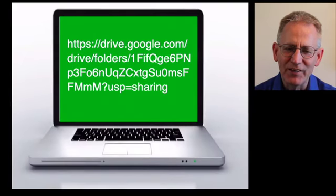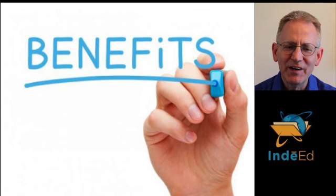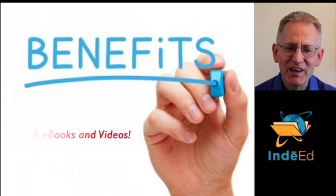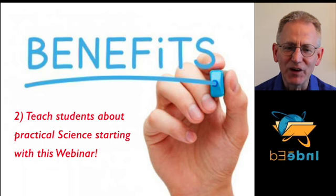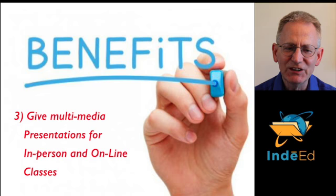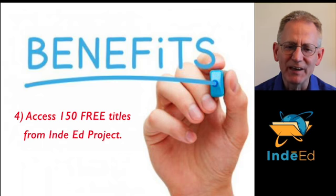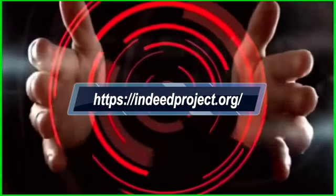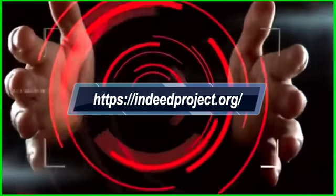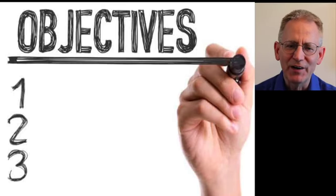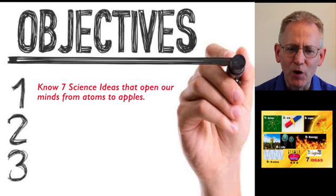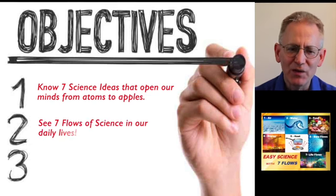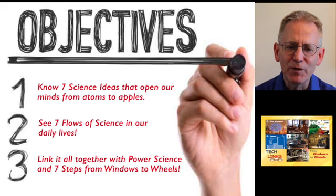You can download all the material at this web link. The benefits of this webinar are teachers get these free e-books and videos, teach students about practical science, give multimedia presentations for in-person and online classes, and access to 150 free titles from IndieEd Project. The objectives are: know 7 science ideas from atoms to apples, see 7 flows of science in daily lives, and link it all together with power science and 7 steps from windows to wheels.